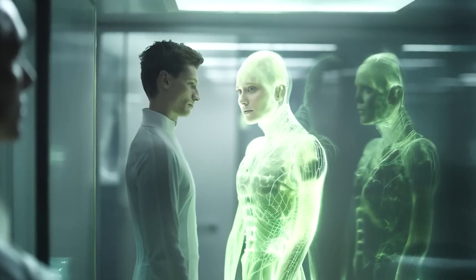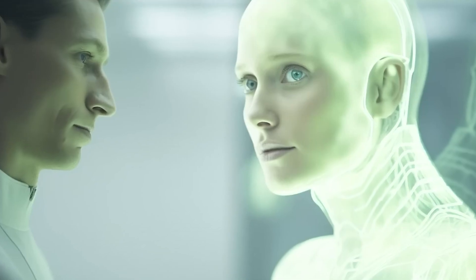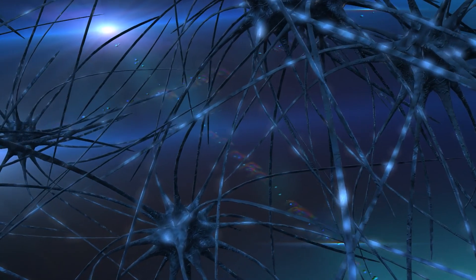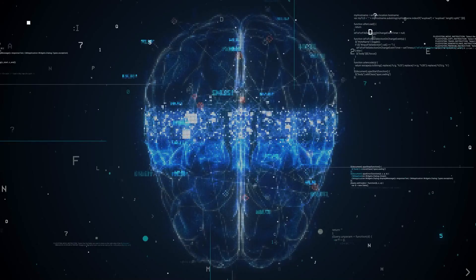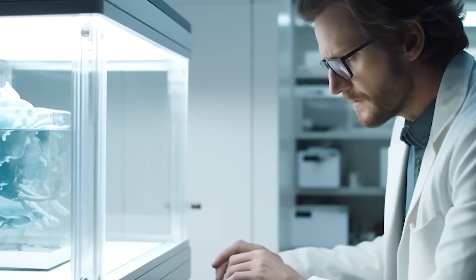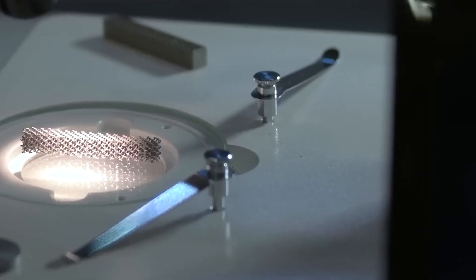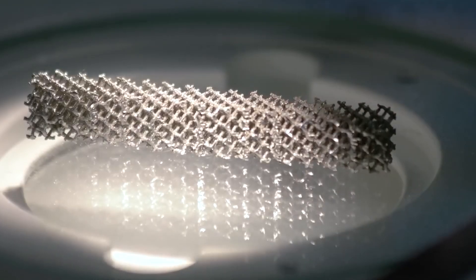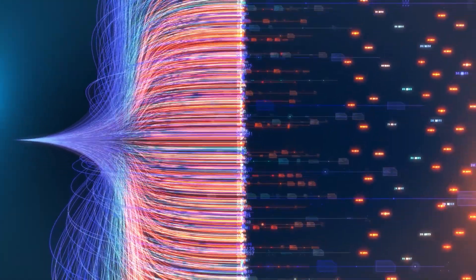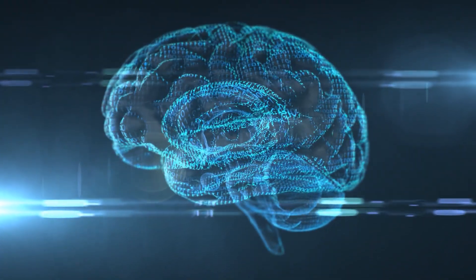The team developed a specialized gel that acted as a scaffold for the cells, allowing them to form connections and create a functional neural network. This biosilicon brain can form new connections and pathways, effectively rewiring itself based on new information and experiences, just like a human brain.